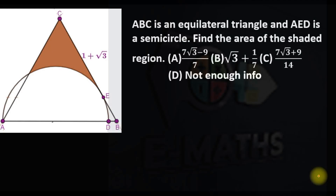Welcome back. We are given a diagram where ABC is an equilateral triangle and AED is a semicircle. We are asked to find the area of the shaded region.